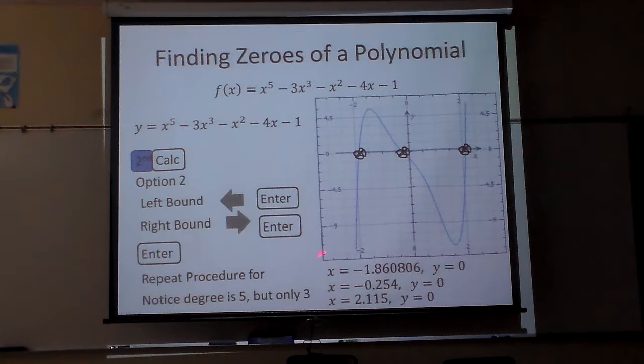And it says your degree is 5, but there's only 3. And the reason is, if you could factor this, which is a skill we have not acquired at this level yet, you would have x squared plus 1 times x cubed minus 4x minus 1. And think about it, x squared plus 1 is a quadratic that would go up 1, and it would look like that.